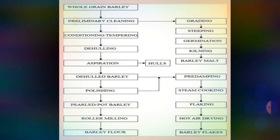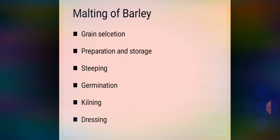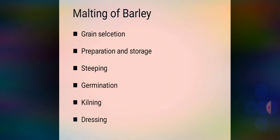The next slide shows a flow diagram of barley products, illustrating how barley flour, barley malt, and barley flakes are manufactured. Now we move to the major portion of our topic: malting of barley and how barley malt is prepared. The process steps are: grain selection, preparation and storage of grains, steeping, germination of grains, and kilning and dressing. Generally, malting is a controlled germination process.